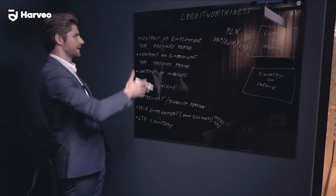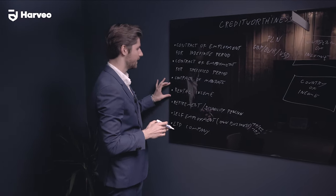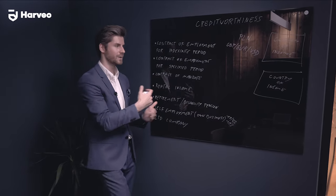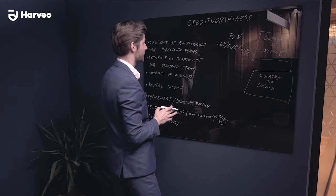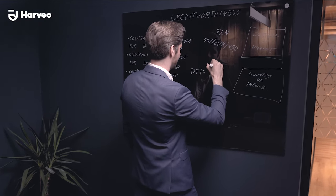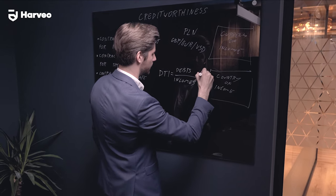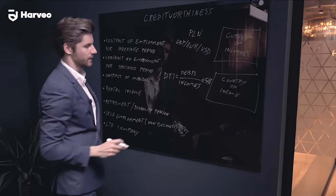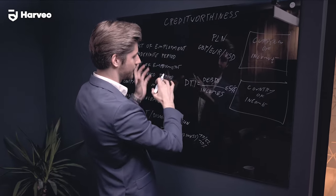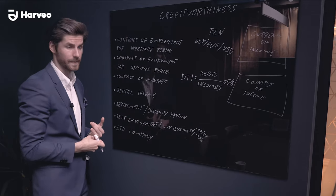There is almost always a way to combine different sources of income. Some banks won't accept rental income as a standalone main source, but when you have two or three income sources combined, it becomes very flexible. Keep that in mind. Regarding DTI — debt-to-income — it should be equal to or lower than 50%.